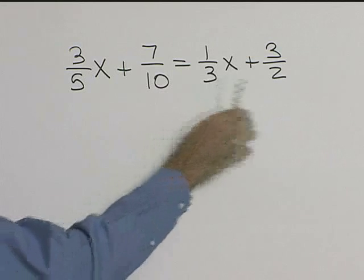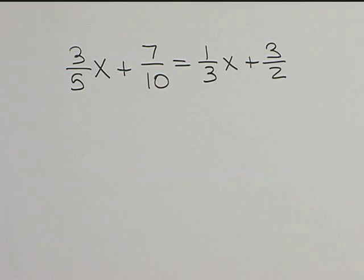Well, what's a number that 5, 10, 3, and 2 all go into? Well, that would be 30.